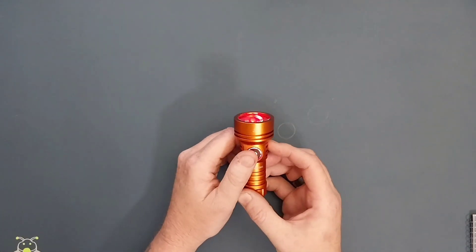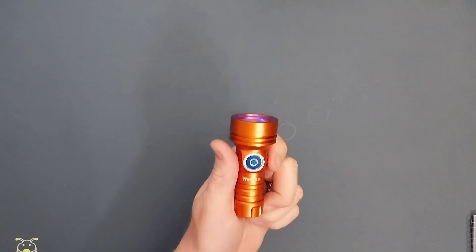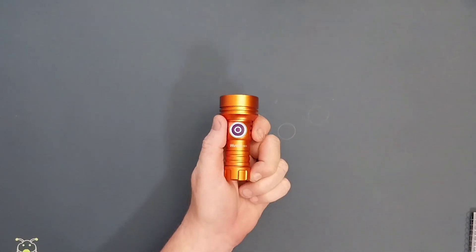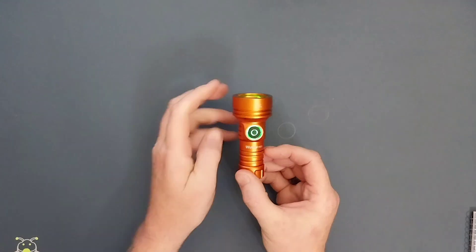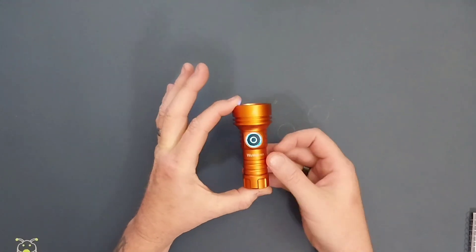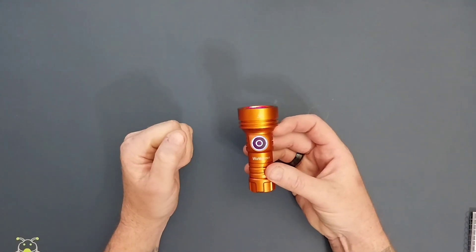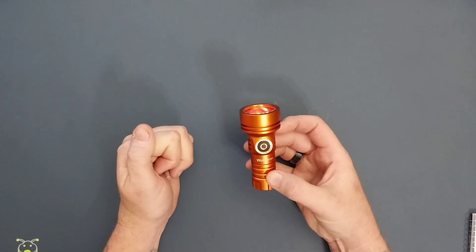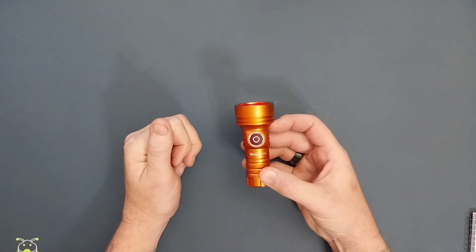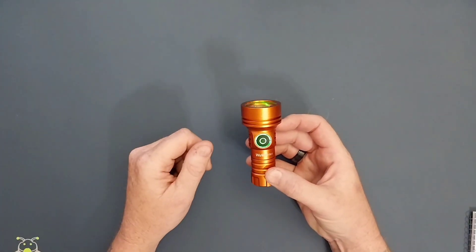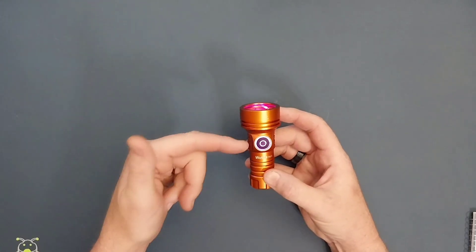It has the Anduril 2 UI. It pumps out an impressive 2000 lumens and 616 meters of throw. Again, we'll have the night shots. Super impressive what this little thing could do, it blew me away.